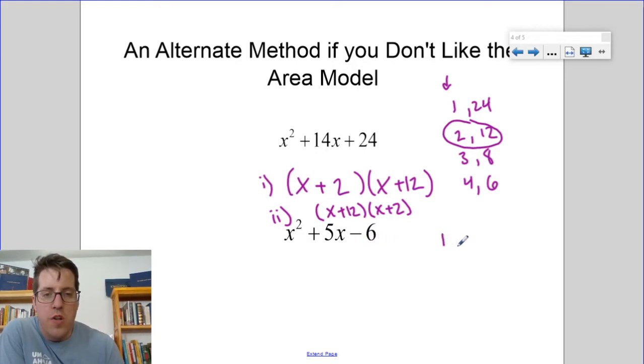Because 1 times 6 does not multiply to make negative 6. It could either be negative 1 times 6, or 1 times negative 6. It could be negative 2 times 3, or 2 times negative 3. All of a sudden, you've got twice as many options.